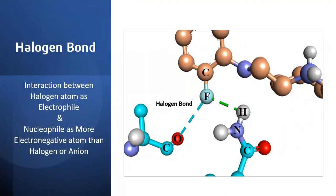The halogen bond is the interaction between a halogen atom acting as an electrophile and a nucleophile, which is a most electronegative atom relative to the halogen or an anion. Here we show a halogen bond in which fluorine acts as an electrophile and oxygen acts as a nucleophile, making a halogen bond shown in cyan color.